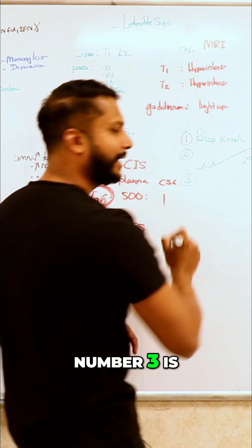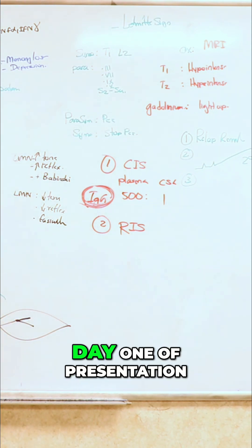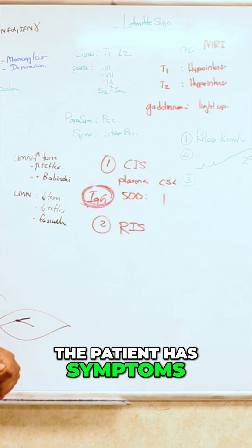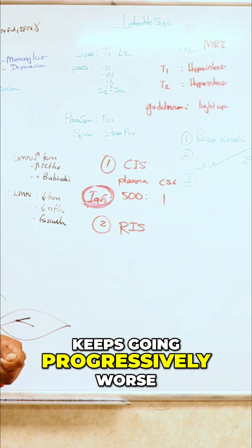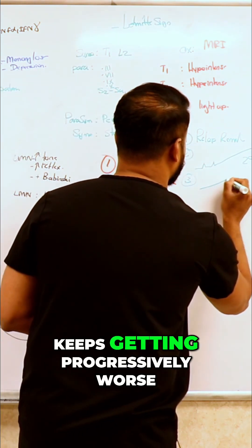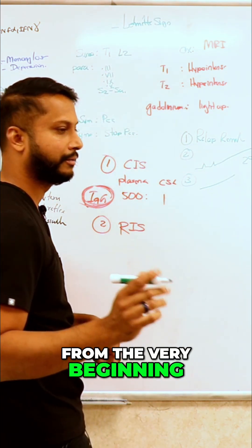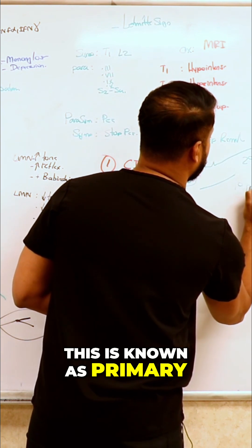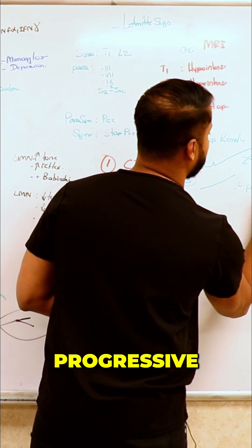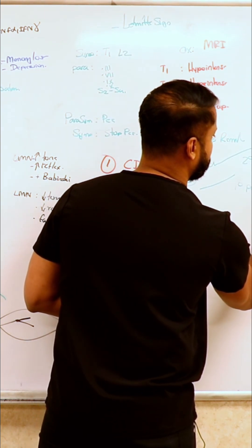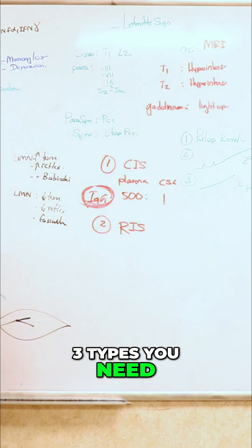Number three is day one of presentation. The patient has symptoms, never has remission, keeps going progressively worse. Keep getting progressively worse from the very beginning. This is known as primary progressive MS. And these are the three types you need to know.